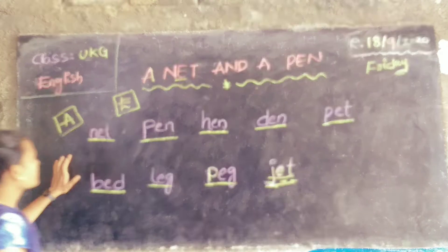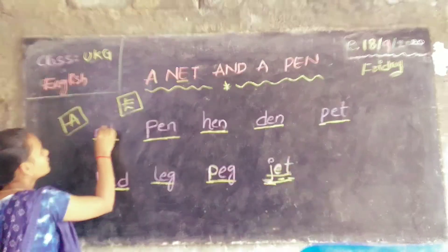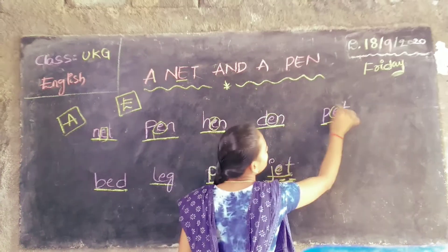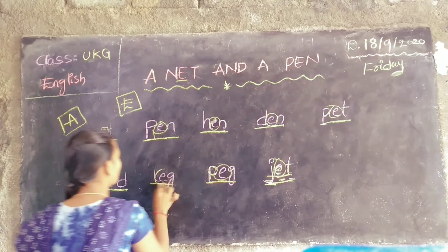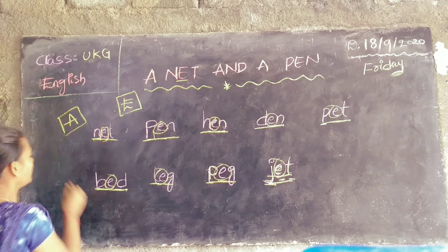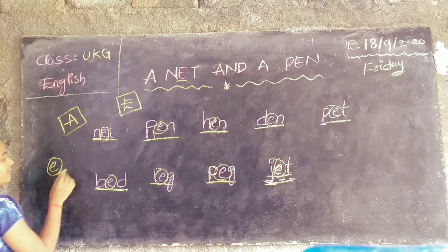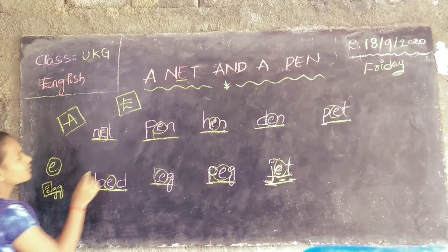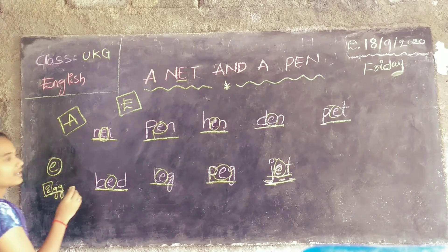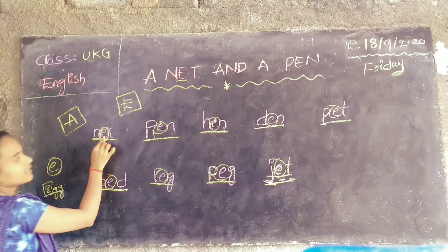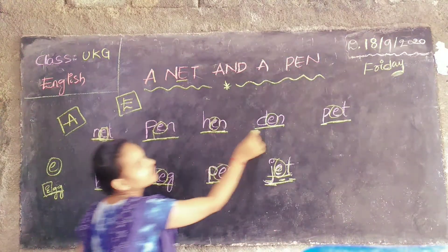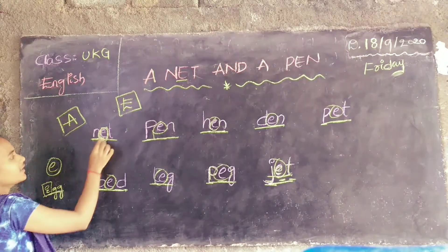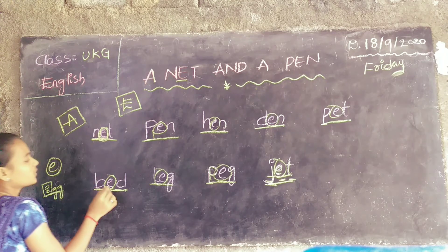Listen here. In all these words, the common letter is E. Okay? E. What is the sound of E? Sound of E is A. For example, how to pronounce? Egg. A. Egg. Okay? All these words — net, pen, hen, den, pet — the common letter E. E sound? A. Okay, thank you.